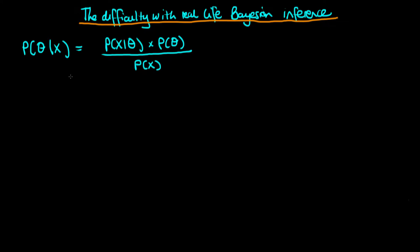On the left here, we have Bayes' rule. On the left-hand side of Bayes' rule, there is the posterior distribution. On the right-hand side, we have the likelihood, the prior, and the denominator term, which is also known as the marginal likelihood.